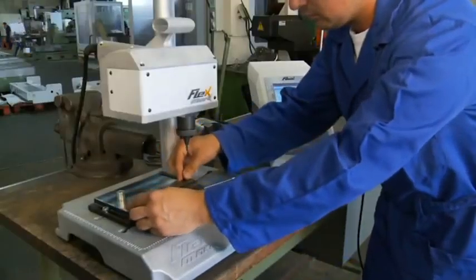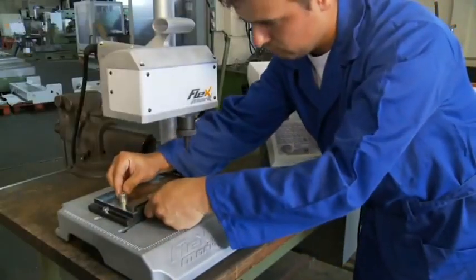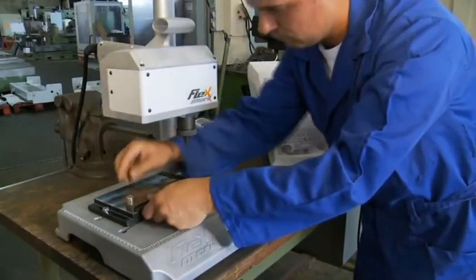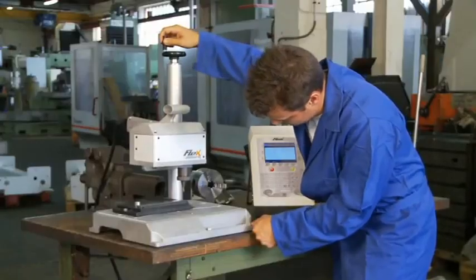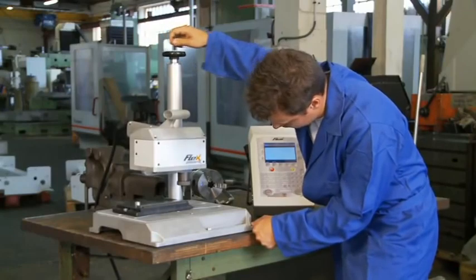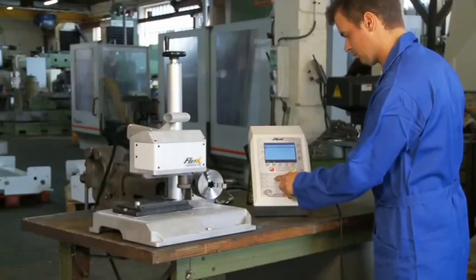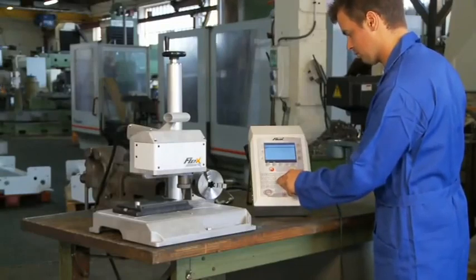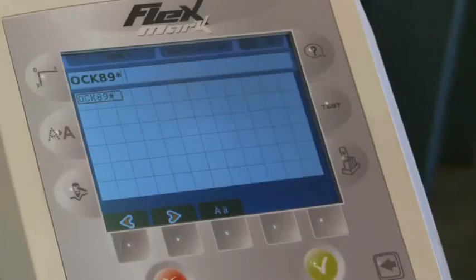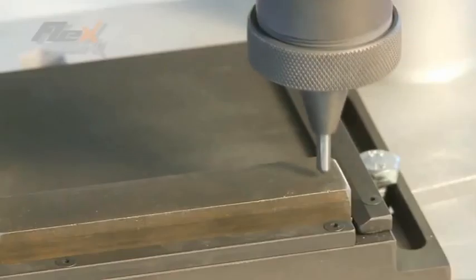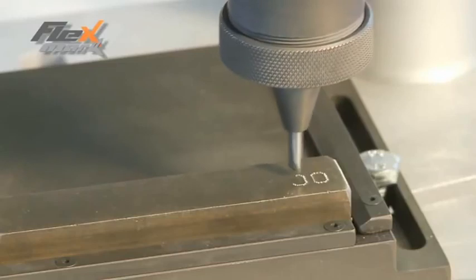To produce a clean and permanent mark, the part is securely positioned on the machine base. The marking head is positioned vertically over the marking area and the marking data entered into the controller through the keyboard. It is possible to test the marking area without impacting the surface.